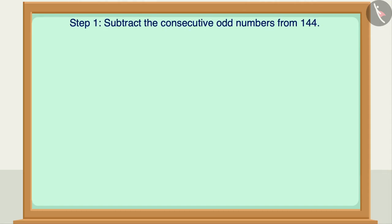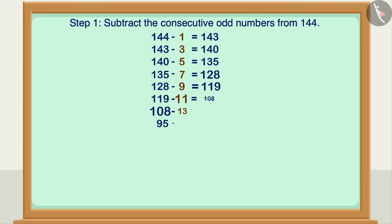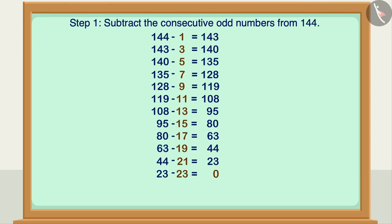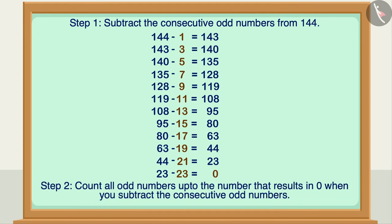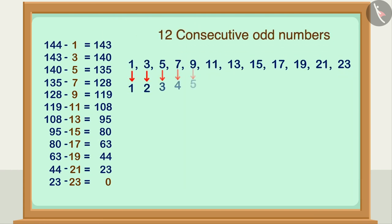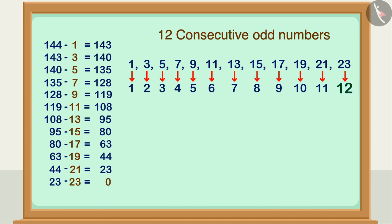First, subtract the consecutive odd numbers from 144. Count all the odd numbers subtracted up to the number that gives zero. Here we get zero by subtracting 12 consecutive odd numbers, so the square root of 144 is 12.